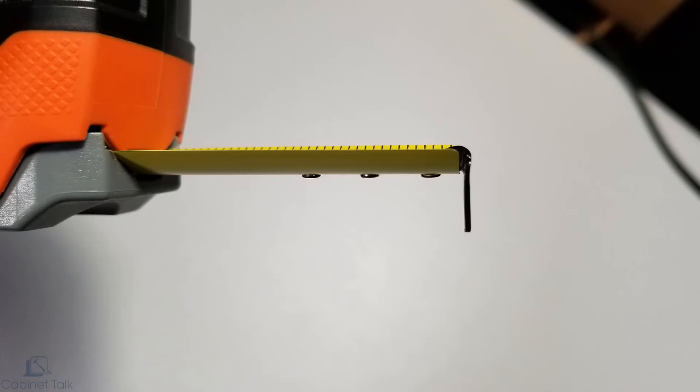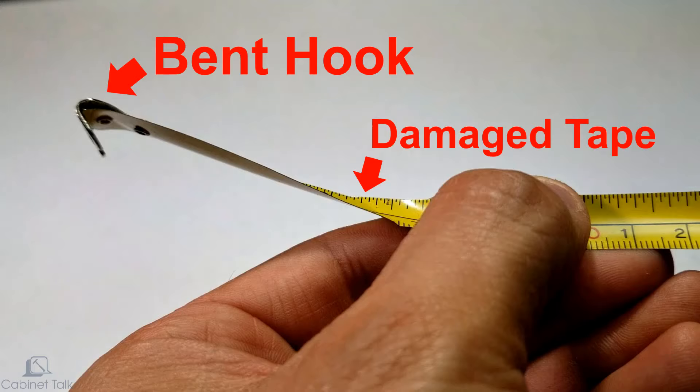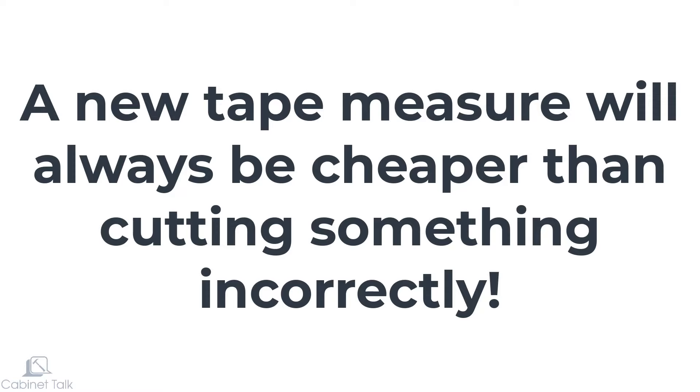The hook should be square with the tape. Avoid dropping your tape measure, because this might damage the hook or other parts of the tool. If your tape measure has a bent hook or a damaged blade, throw it out and buy a new one. A new tape measure will always be cheaper than cutting something incorrectly in the shop.